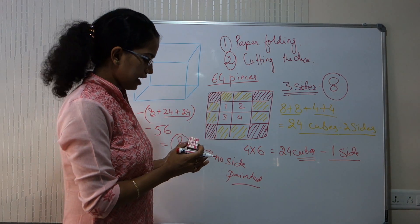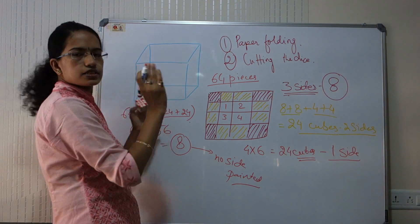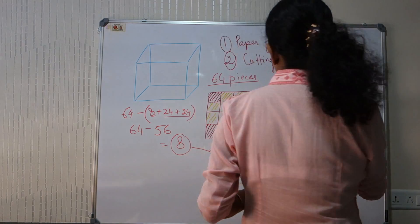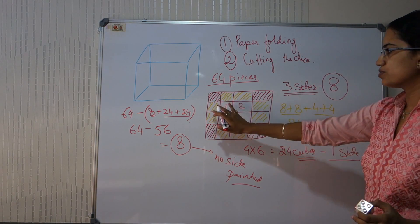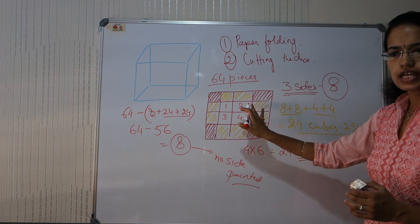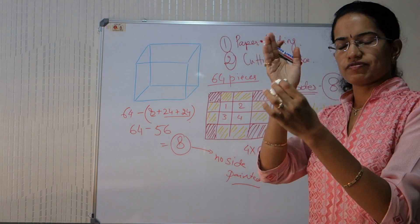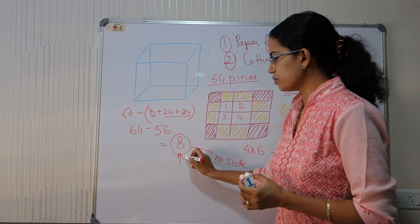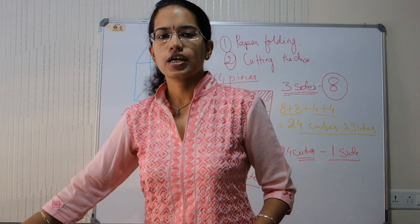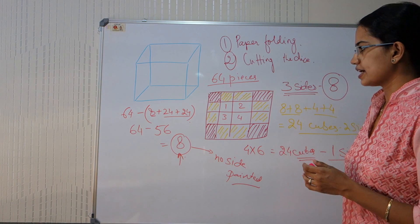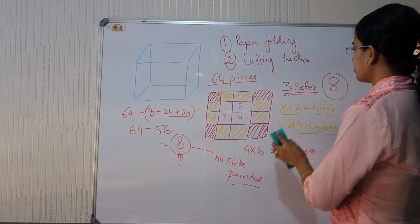With this we understand that if we have a cube with 6 faces, we can find out the number of cubes with 3 sides painted, 2 sides painted, 1 side painted, and in the center of the cube when we cut it into pieces, there would be 8 cubes that remain with no side painted. This is the first thing we tried to understand today.